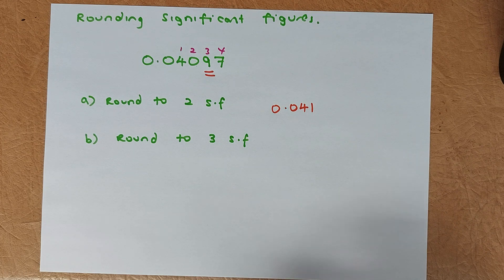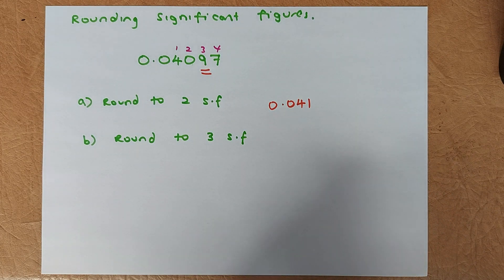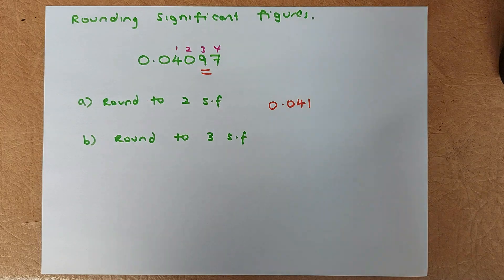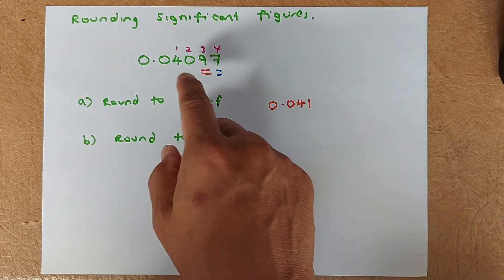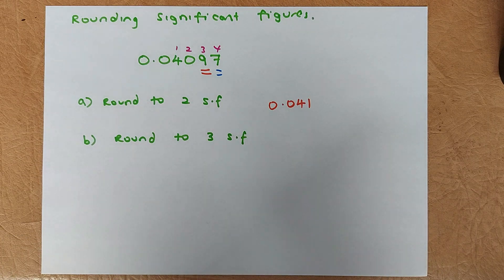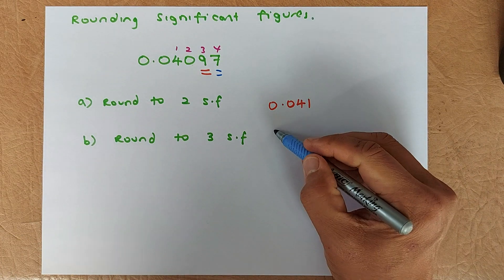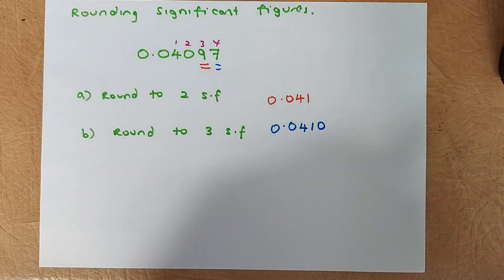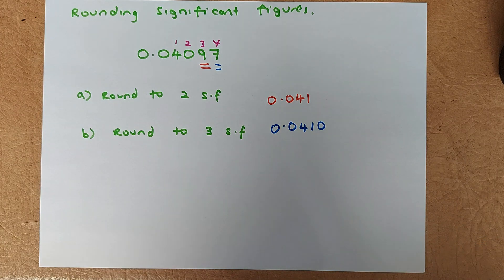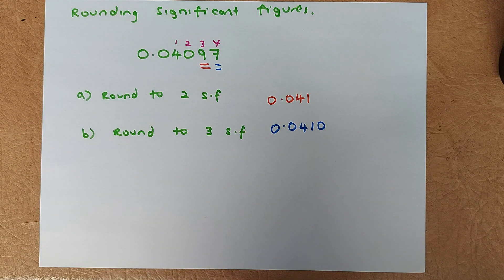To round to three significant figures, look at the fourth number, which is seven. Seven is more than five, so round up. The digits 409 round up to 410, so the answer is 0.0410. Hopefully you get it. If not, just put a comment below and I'll try to help you with significant numbers. Have a good day and enjoy your holiday. Cheers.